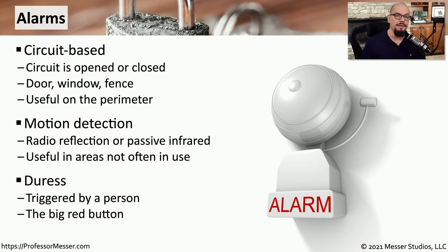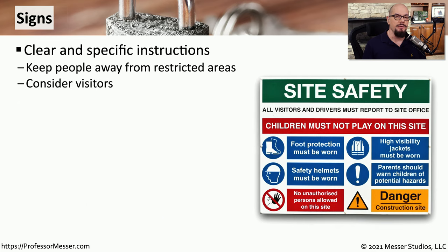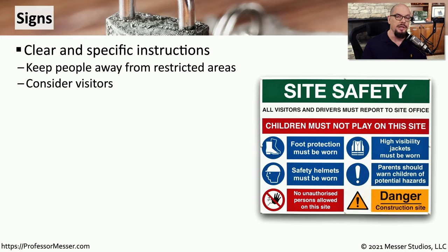Your alarm system might also have a duress button, sometimes called a panic button. If you feel the situation is threatening and you want to call for a third party, you can push the panic button and it will handle calling for additional reinforcements. It's always important to provide signage so that people know exactly what should be expected from an area. There may be certain types of protection that are required, maybe a particular group of people is allowed or not allowed in a location, and there may be a requirement to inform people of a dangerous environment — not only for employees but also for visitors who've never been in the area before.